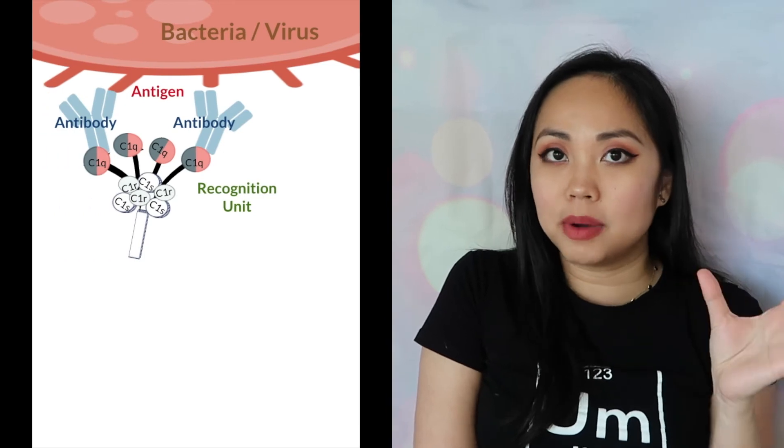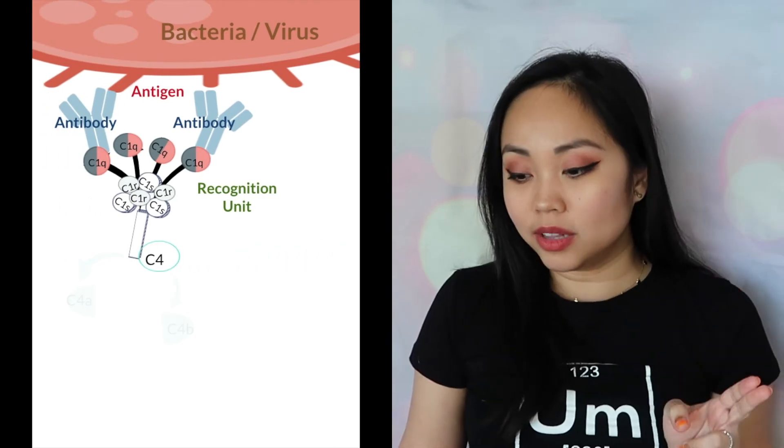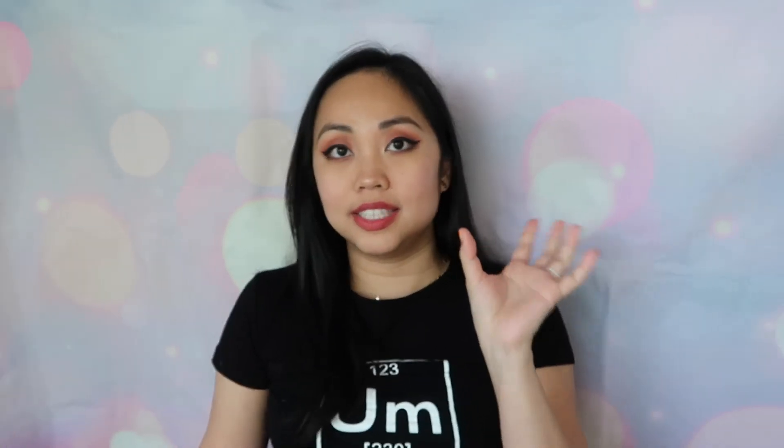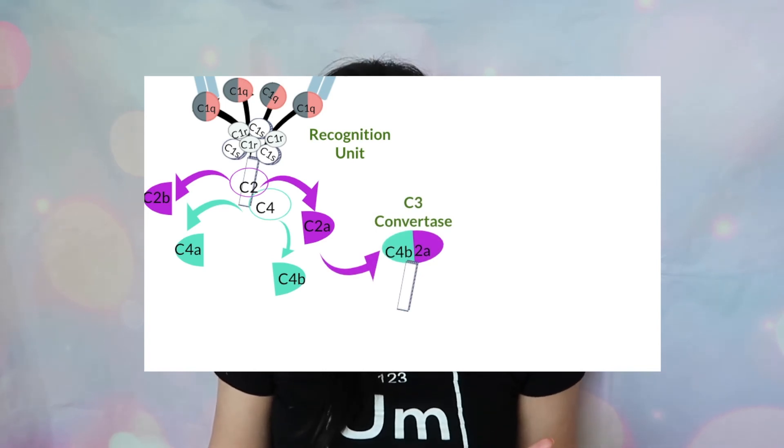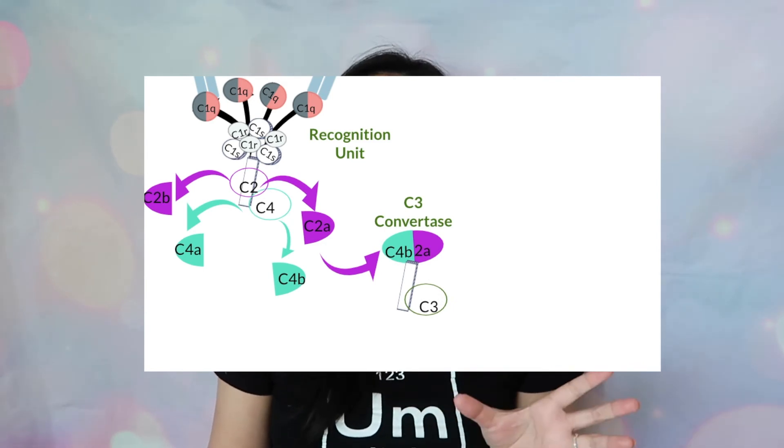Does one pore kill a bacteria? No, but complement is very effective because at every step there is signal amplification. Between the recognition unit, when it first attaches into that antibody-antigen complex, there are 30 molecules of C4 being split per one C1QRS unit — that's the first amplification. And when it moves forward and does the C3 convertase, the activation unit, it splits 200 molecules of C3 per C4B2A that is made. So in each step, complement is amplified.